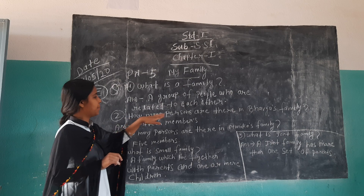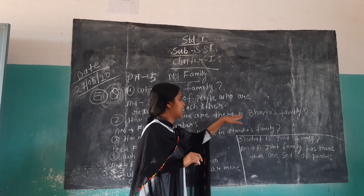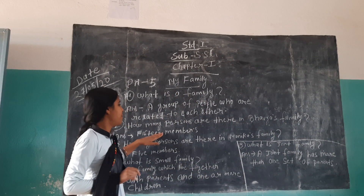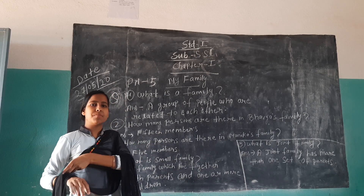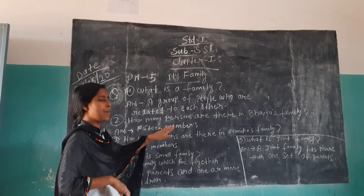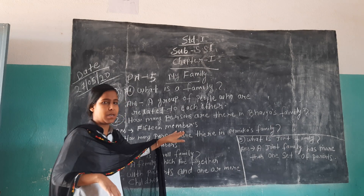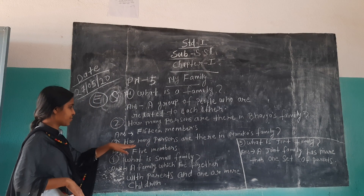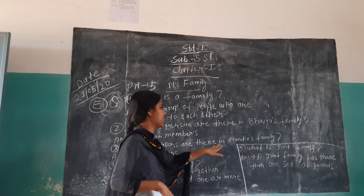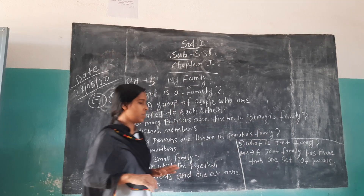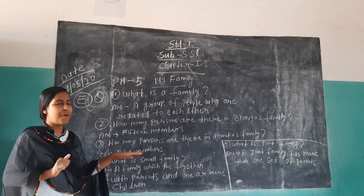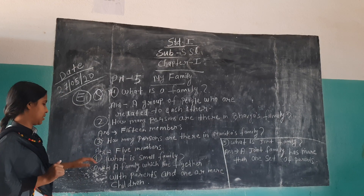Number 2: How many persons are there in Bhavya's family? The answer is 5 members. Only 5 members are in Bhavya's family.